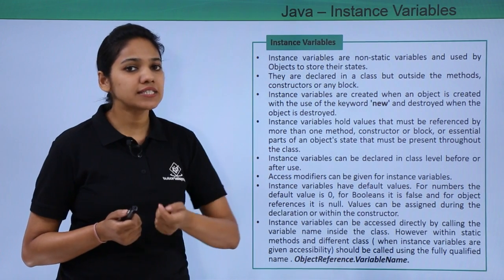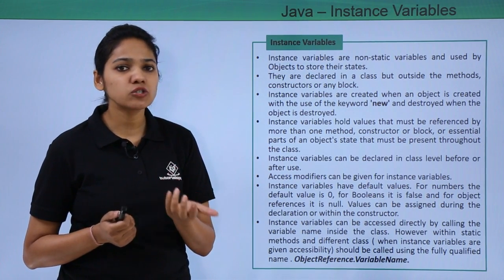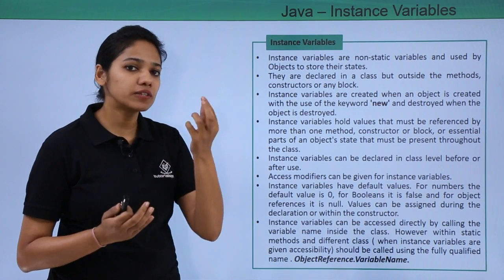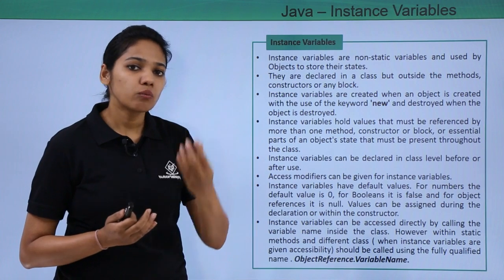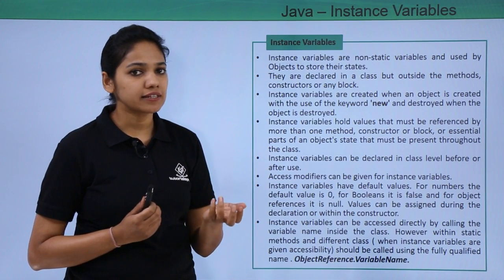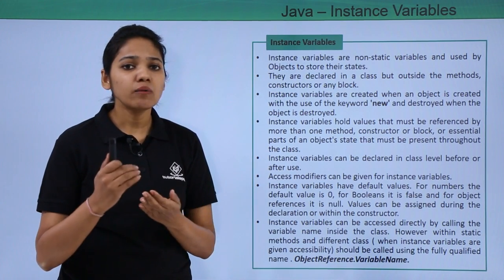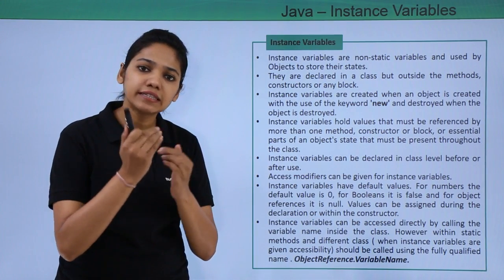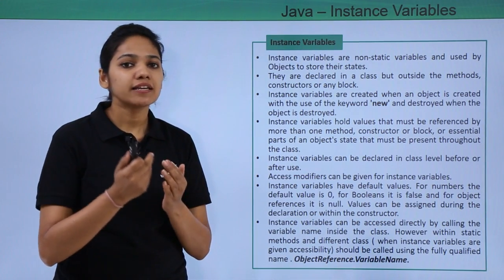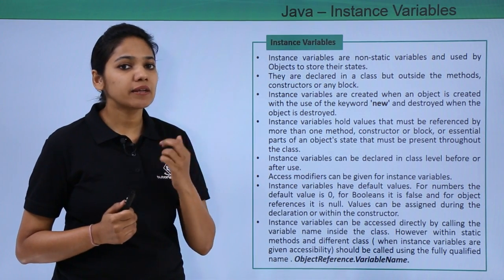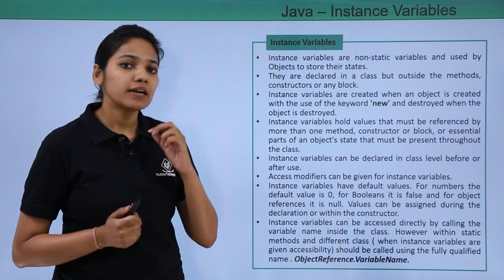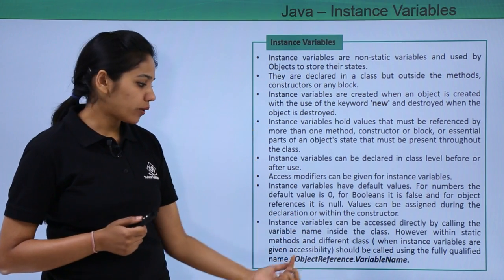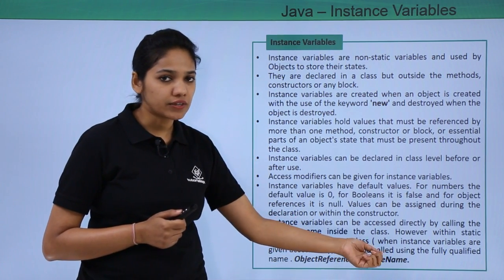What are access modifiers? These are nothing but like public, private, and so on, which define the visibility of a variable within the class or outside the class. These variables can be called directly with the name of the variable or by providing an object reference.